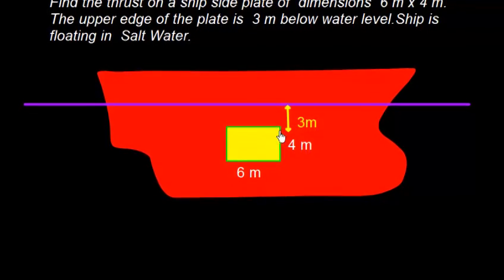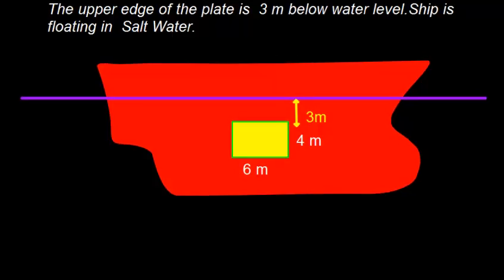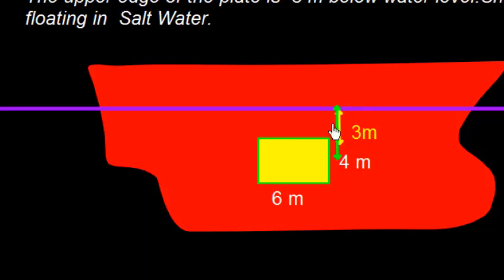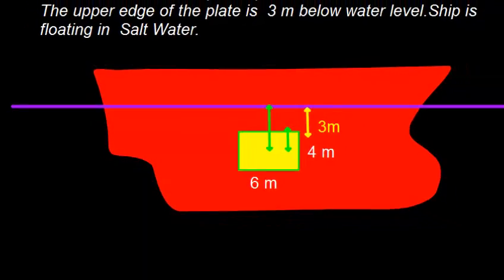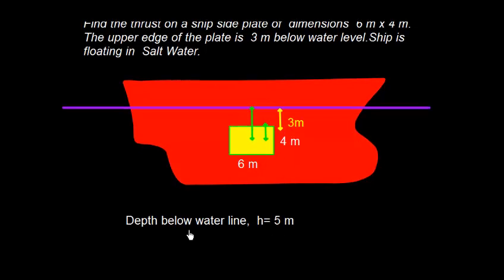The geometrical center of this plate is going to be somewhere here, which is 2 meter from the upper edge. The total distance of this geometrical center from water line will be 3 plus 2. 2 is this. Total distance is going to be 5 meter. And we can write that the depth below water line is 5.